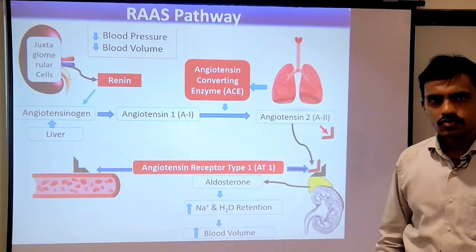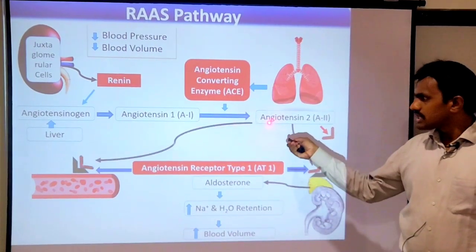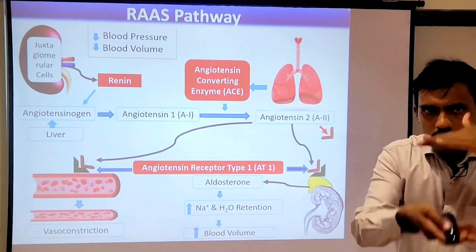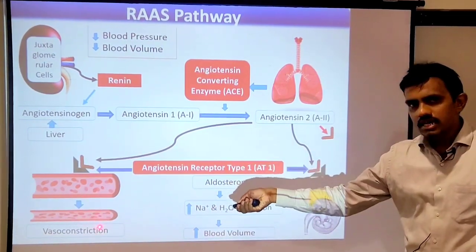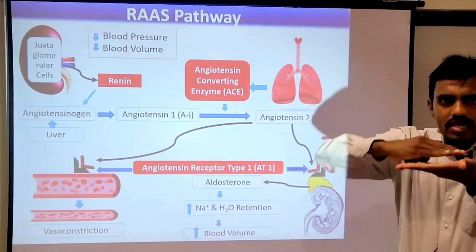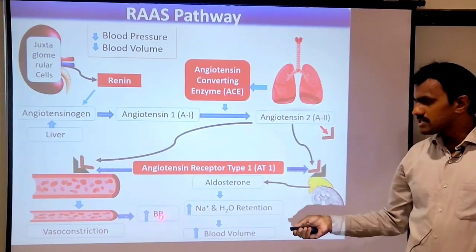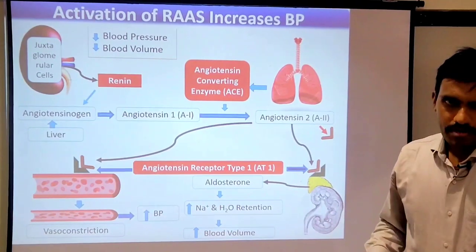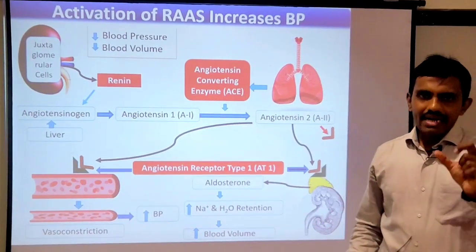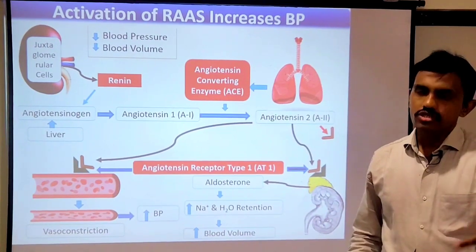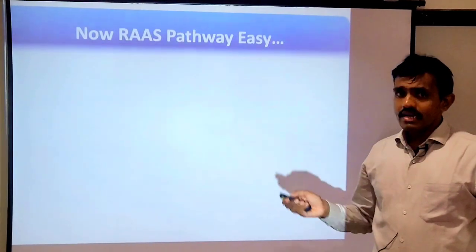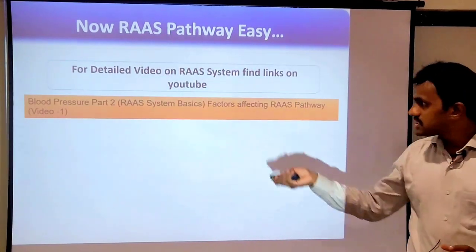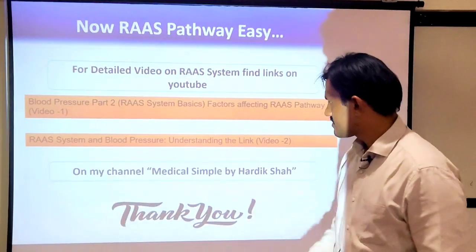The objective is achieved. Additionally, Angiotensin 2 also binds with AT1 receptors on blood vessels, causing strong vasoconstriction. With vessel constriction, BP increases again. This is how activation of the RAAS pathway leads to an increase in blood pressure. For better understanding of the whole RAAS pathway, you should find the links on the channel. Thank you.